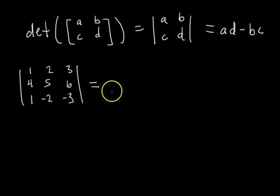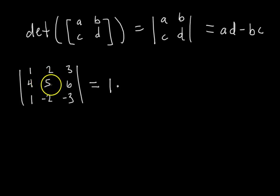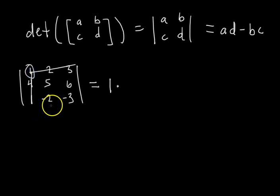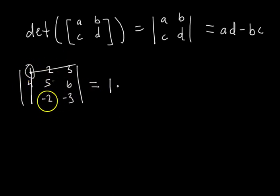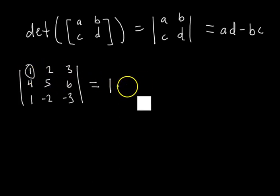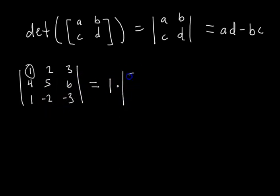We go through each element of the first row. Starting with the 1: we say 1 times the determinant of what's called a minor — a smaller matrix. We cross out the first row and first column, and what's left is a 2x2 matrix — this is the minor. So the determinant of the whole thing has 1 times the determinant of what's left: that's the 2x2 matrix with entries 5, 6, −2, −3.